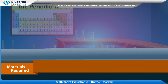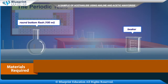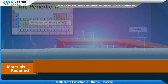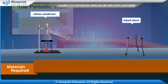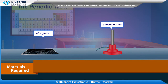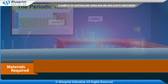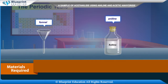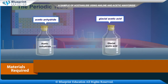Materials required are: round bottom flask 100 ml, beaker, reflux condenser, tripod stand, wire gauge, Bunsen burner, funnel, aniline, acetic anhydride, and glacial acetic acid.